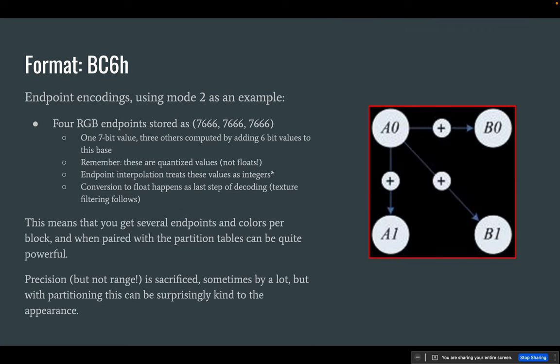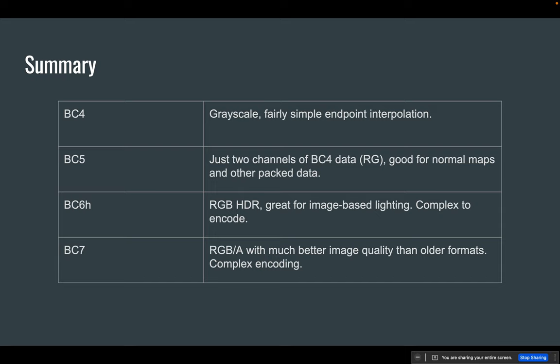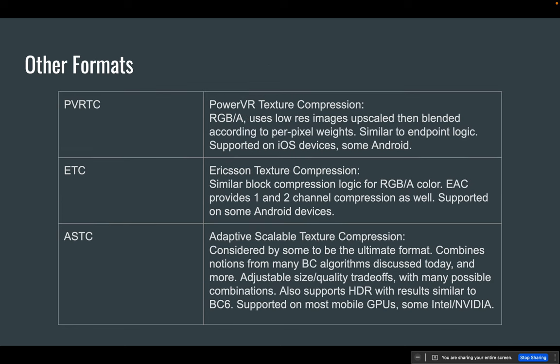Quick summary: BC4 is grayscale, fairly simple endpoint interpolation. BC5 is essentially two channels of BC4 data, good for lots of non-color stuff. BC6H is RGB HDR with no alpha, rather complex to encode and decode. BC7 is RGB with optional alpha, much better image quality than the older color formats, and probably everyone should use it rather than something else for color data.